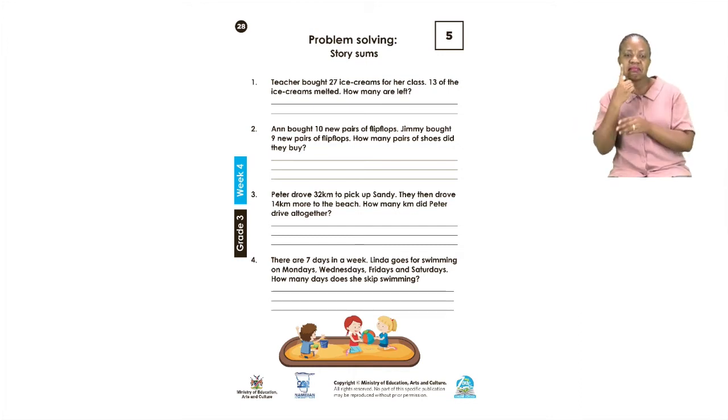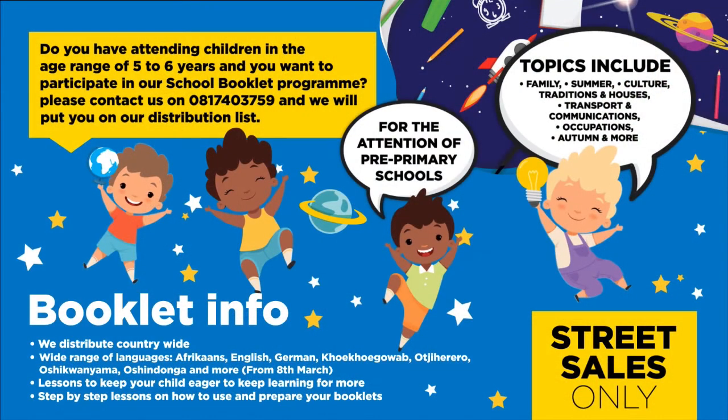Take your time and we will be right back after this short advert break. Do you have children in the age range of five to six years and want to participate in our school booklet program? Please contact us on 08174 3759 and we will put you on our distribution list for the attention of pre-primary schools.